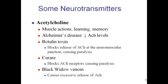Stopping acetylcholine activity leads to paralysis and eventually death, because you can't paralyze the heart muscle. Another kind of poison is black widow venom, which also acts on acetylcholine — but differently. Black widow venom causes a flood of acetylcholine.